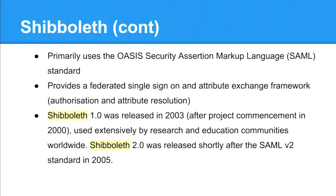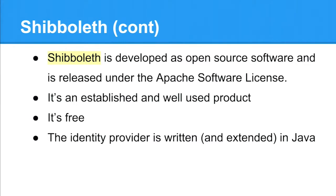I must caveat this presentation - I'm talking about Shibboleth 2. They've recently released Shibboleth version 3, which I believe does have OpenID Connect support as well. It primarily uses the OASIS Security Assertion Markup Language standard, providing a federated single sign-on attribute exchange framework for authorisation and attribute resolution. Shibboleth 1 was released back in 2003, so it's quite a mature product, and it's used extensively by research and education communities worldwide. Shibboleth 2 was released shortly after the SAML version 2 standard in 2005 - that's 10 years ago. It's developed as open source software and released under the Apache software licence.